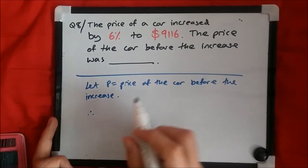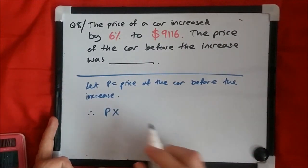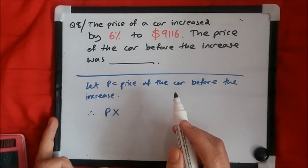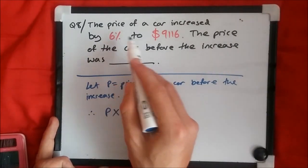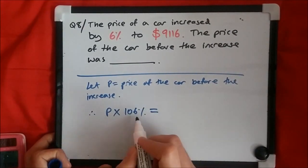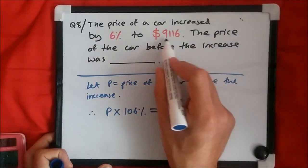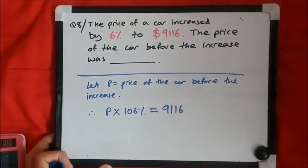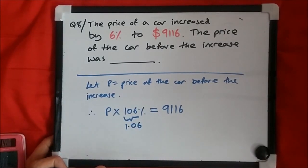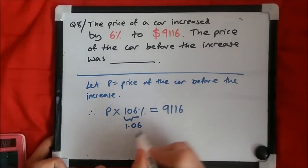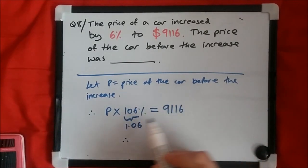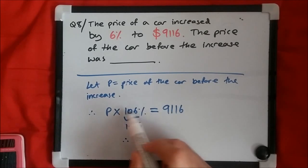So therefore: the initial price p was multiplied by some factor. We know the original amount is 100 percent, and to increase by 6 percent we think of it as 100 plus 6, which is 106 percent. So p multiplied by 106 percent — which is the same as 1.06 — equals the final amount of $9,116. We have p times 1.06 equals 9,116. To isolate p, we do the opposite of multiplication, which is division.